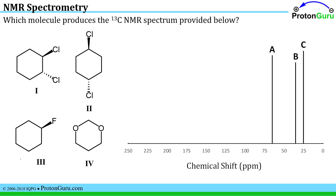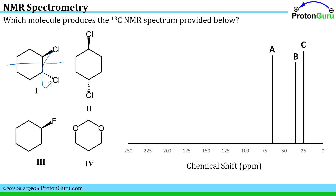Here we have only three signals in our carbon NMR spectrum. Compound one doesn't have a plane of symmetry, but if I rotate the molecule 180 degrees about the line I've drawn through the carbon-carbon bonds, we would still have the same molecule. So rotation symmetry allows you to interconvert different groups, making them equivalent. Those two together would give me one signal, these two a second signal, and these two, related by rotation, a third signal. I see three signals, so that's in the running as one of the potential answers.